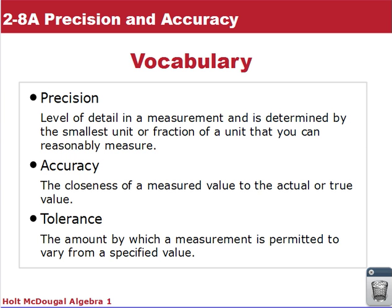Accuracy is the closeness of a measured value to the actual or true value. And then tolerance is the amount by which a measurement is permitted to vary from a specified value, often written as plus or minus a value.